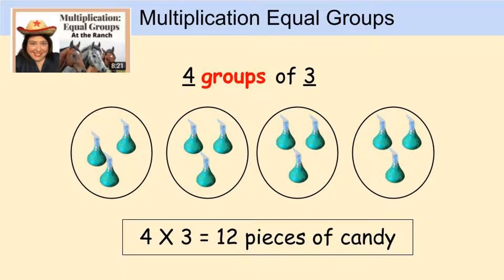One of my previous YouTube videos was called Equal Groups at the Ranch. That lesson showed us how to multiply by creating equal groups. In this example, we have four groups of three — four circles, which are the equal groups, and we put three Hershey Kisses inside each circle. When we count the candy, we easily see that four times three equals twelve.